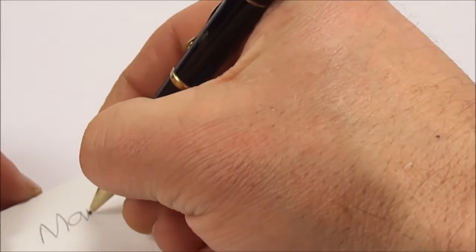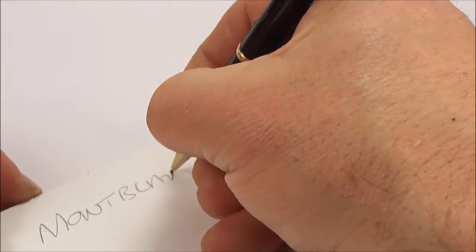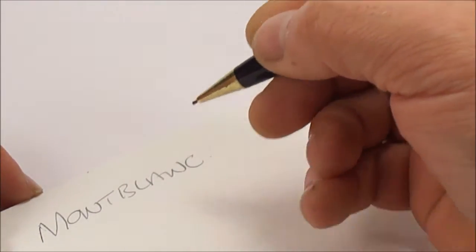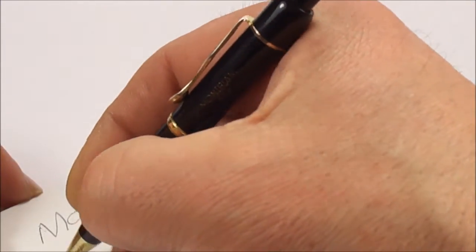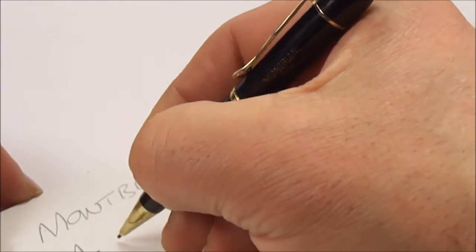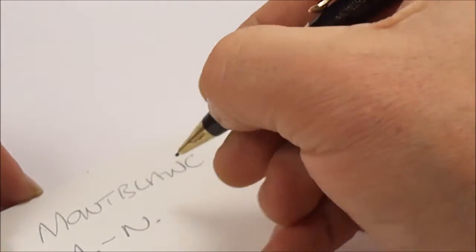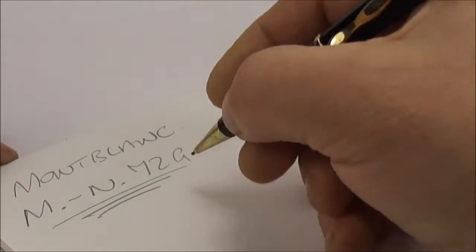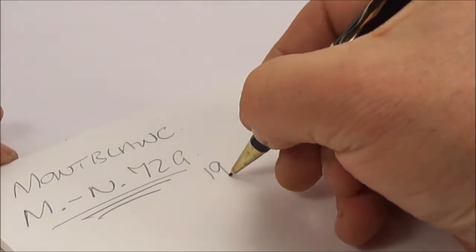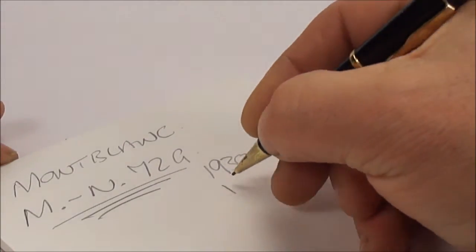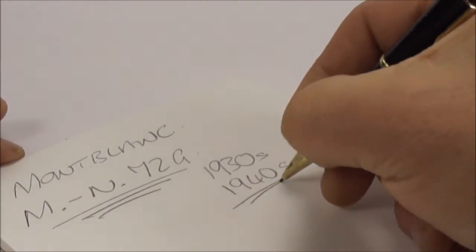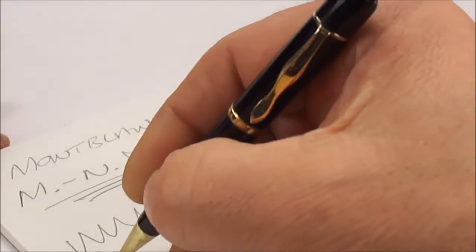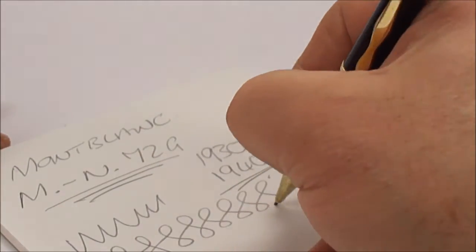So what we have is a Mont Blanc. Please don't send messages telling me I'm pronouncing it wrong because that's the way I pronounce it, Mont Blanc, but it's an M dash N and then a 72 G and I believe that is the model. This particular one is from the 1930s maybe even the 1940s, it is definitely a vintage pencil and as you can see in full working order.